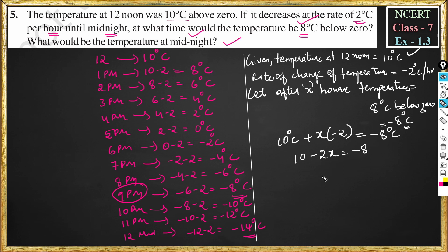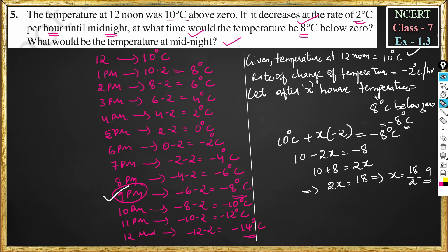So minus 8 comes here. This becomes 10 plus 8, which is equal to 2x. So this can be written as 2x equals 10 plus 8, which equals 18, which means x equals 18 divided by 2, that is nothing but 9. After 9 hours, temperature becomes 8 degree Celsius below zero. So 12 noon plus 9 hours equals 9 pm. So at 9 pm the temperature becomes minus 8 degree Celsius.